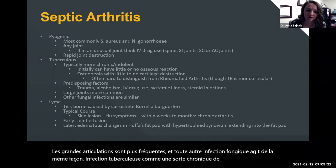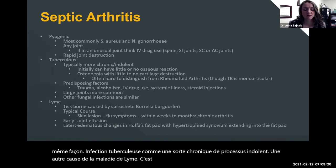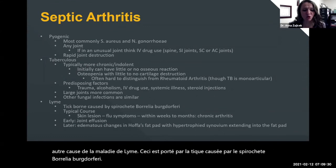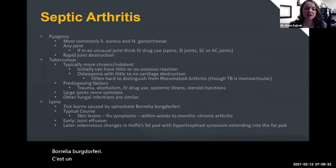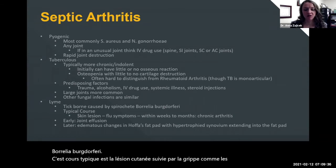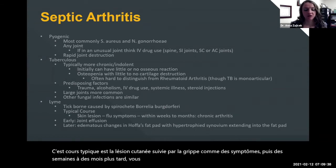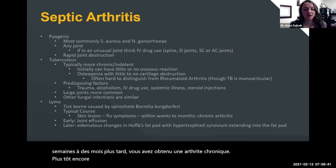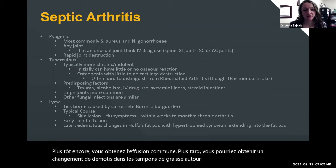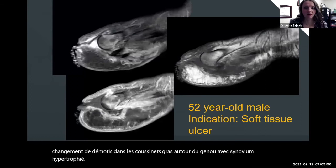Another cause is Lyme disease — tick-borne, caused by the spirochete Borrelia burgdorferi. Its typical course is the skin lesion, followed by flu-like symptoms, and then weeks to months later a chronic arthritis develops. Early on, you get a joint effusion. Later, you might get edematous changes in the fat pads around the knee with hypertrophying synovium.